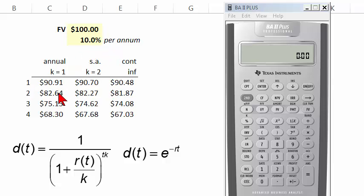So here I have a row: one year, two years, three years, four years. This last row here is the present value of $100 received in four years at 10% per annum with annual discounting, with semi-annual, and with continuous. As usual, the compound frequency matters.